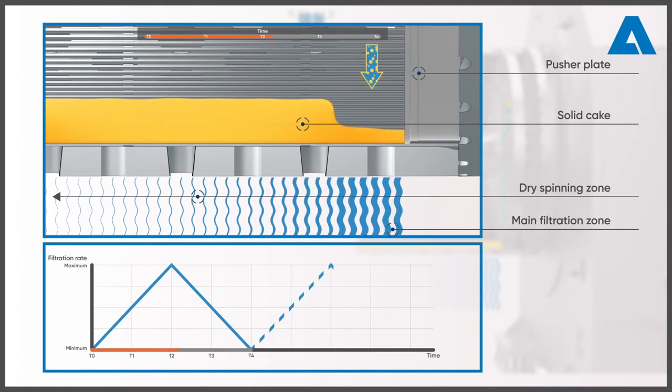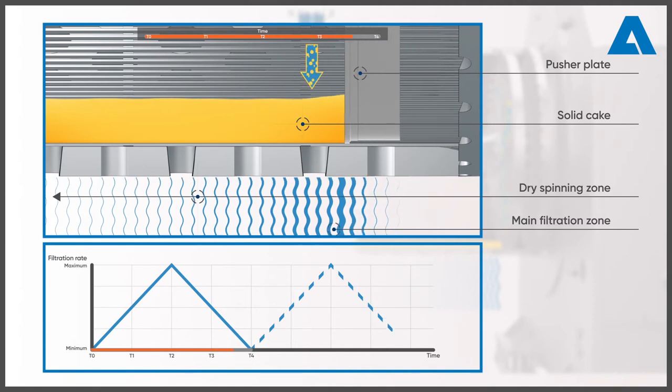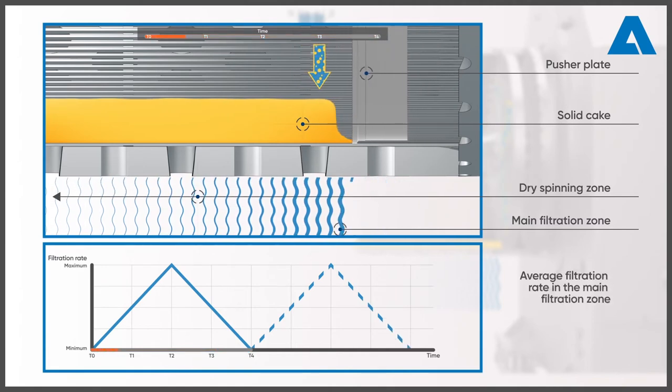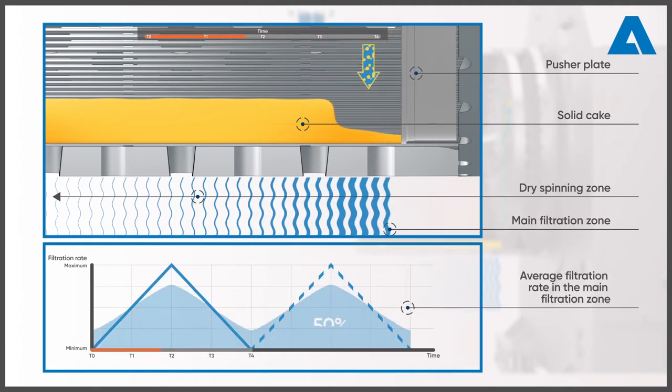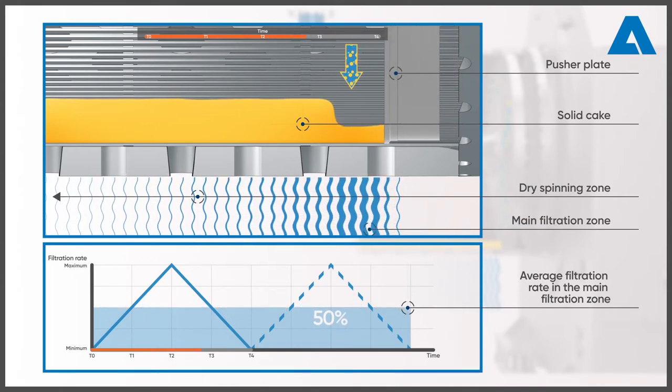Due to the constant change between minimum and maximum filtration, a conventional design of pusher centrifuge achieves an average filtration rate of 50% of the maximal filtration rate.